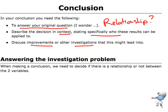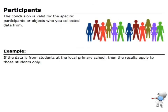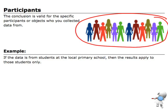When I answer that question, I'll decide: is there a relationship, yes or no? In terms of the participants, the results I've got only apply to the specific group of people that I collected data about. I can suggest or make an inference that maybe those results would apply to other people like them, but I've got to be very clear that these results only apply to the particular people I'm taking data from. For example, if the data is from students at the local primary school, then the results only apply to those primary school students.